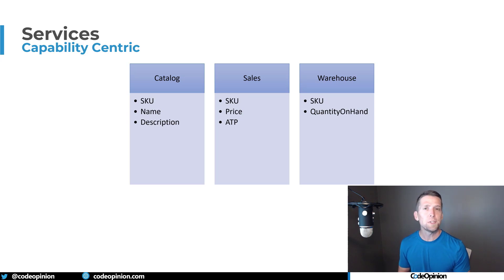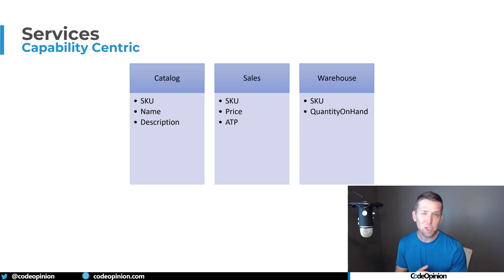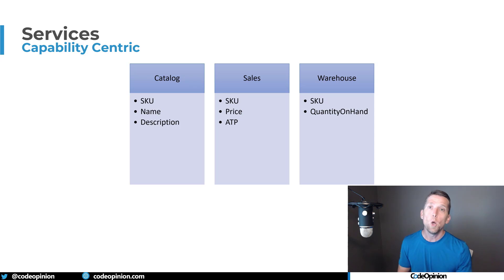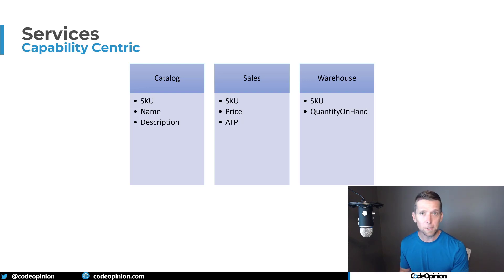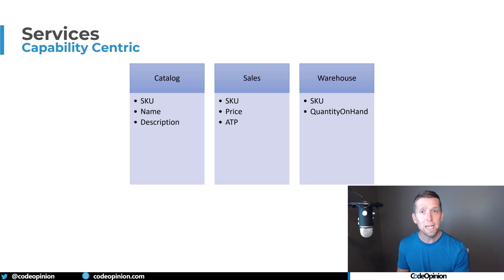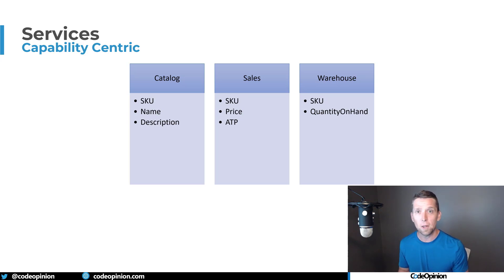Available to Promise is a business function about understanding what you think the quantity on hand will be at any given time. That comes from what you think you actually have in the warehouse — because physical goods on the shelf are what actually count, plus what you've purchased and what orders have been placed but haven't shipped yet. That's the concept of ATP, and that would also live in sales. So shifting from thinking about tables or entities as services, you should instead think about what capabilities you need to provide and what data should live within a service to support those capabilities. If you move price and ATP to sales, you eliminate the dependency on the catalog or the warehouse.